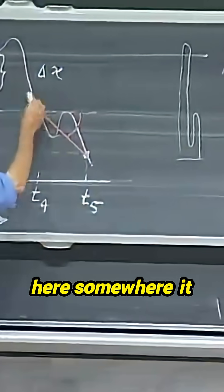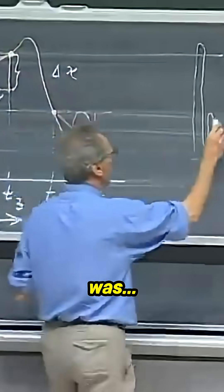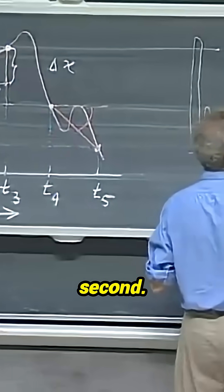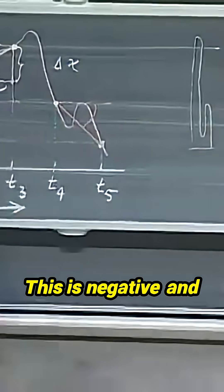And suppose here somewhere it was, I call that v2, suppose that was minus 100 meters per second. This is negative and this is positive.